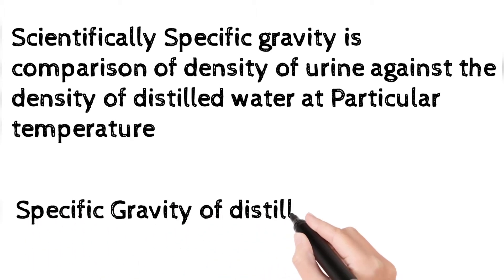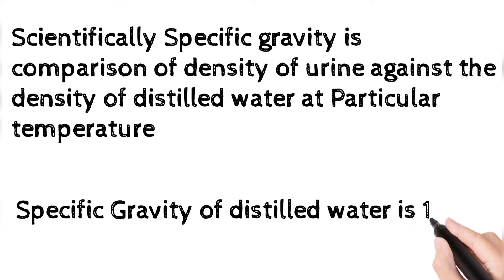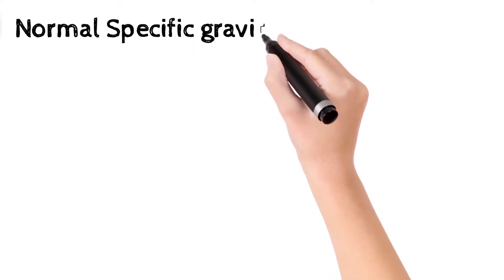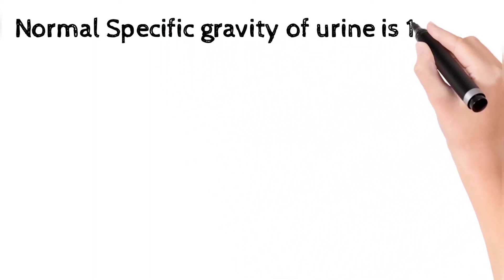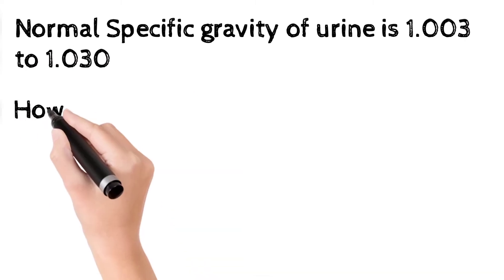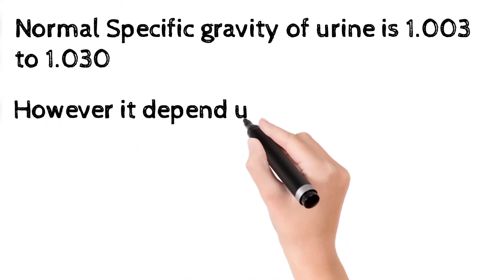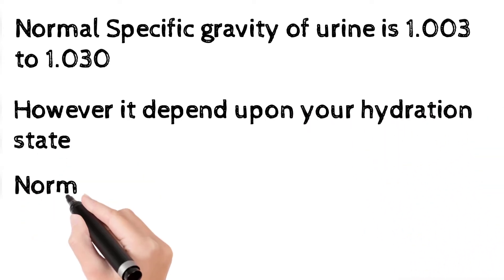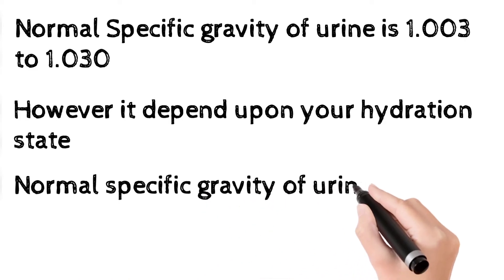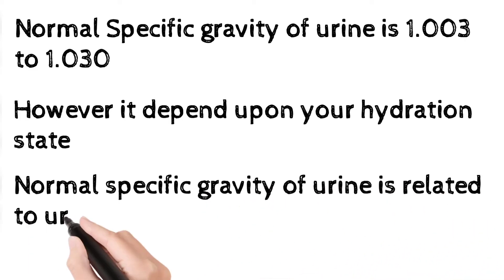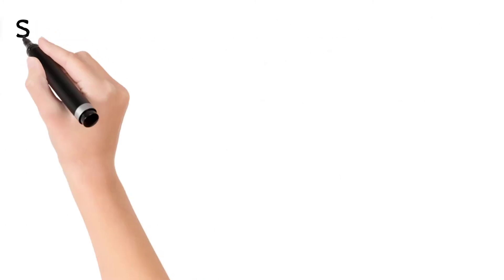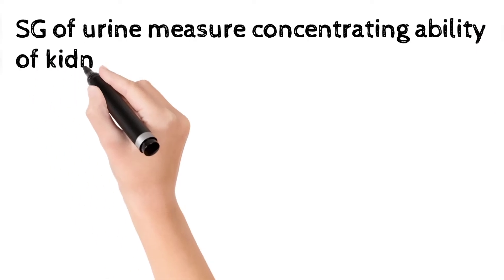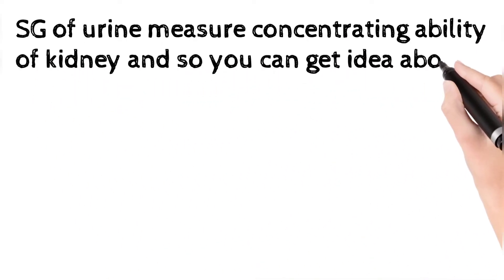The specific gravity of distilled water is 1.0. The normal specific gravity of urine is 1.003 to 1.030 — that is the normal range, which can be asked in MCQs. Your specific gravity of urine may change according to your hydration status. Normal specific gravity of urine is related to urea and sodium.